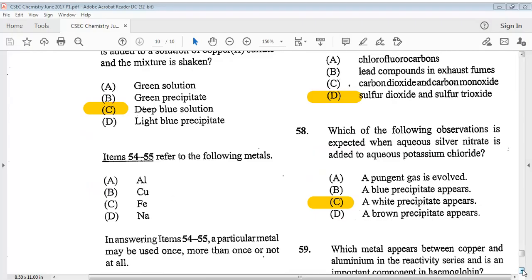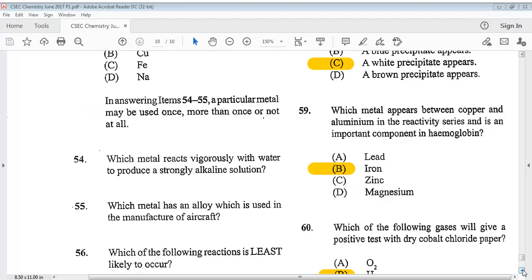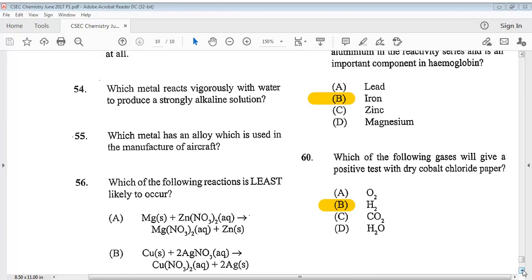Question 58 says, which of the following observations is expected when aqueous silver nitrate is added to aqueous potassium chloride? The answer is C, a white precipitate appears. Question 59. Which metal appears between copper and aluminum in the reactivity series and is an important component in hemoglobin? The answer is B, iron. Question 60, which of the following gases will give a positive test with dry cobalt chloride paper? The answer is B, H2.